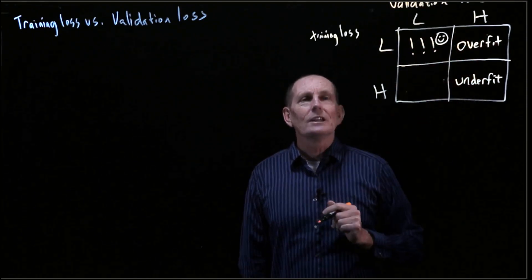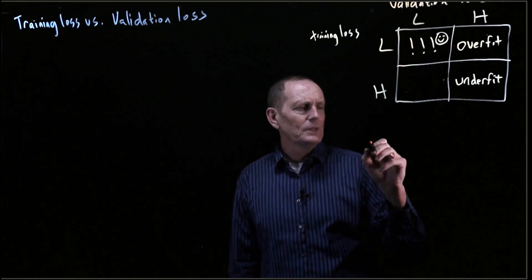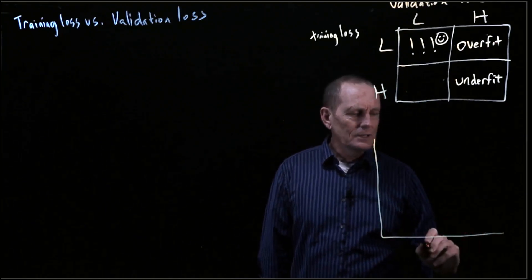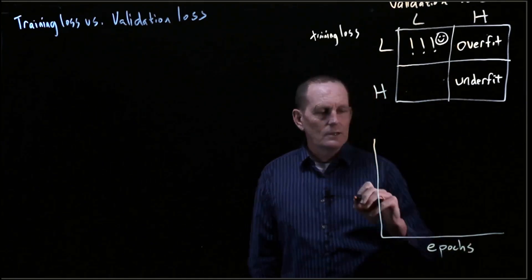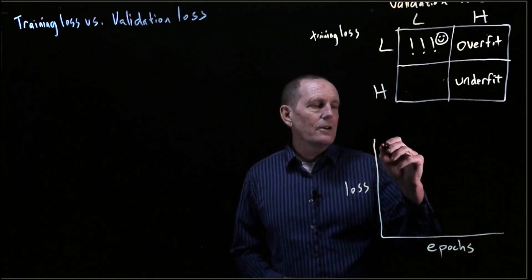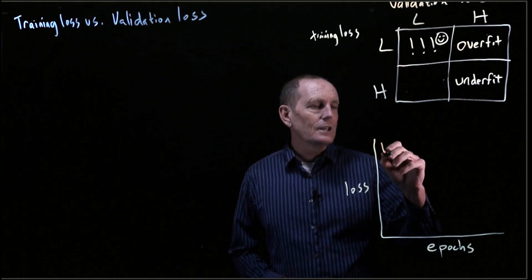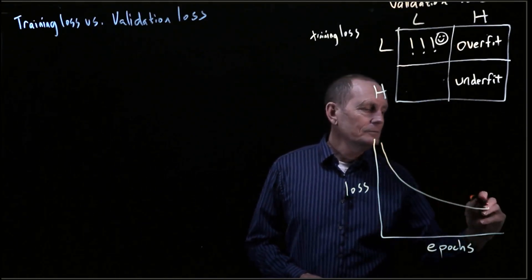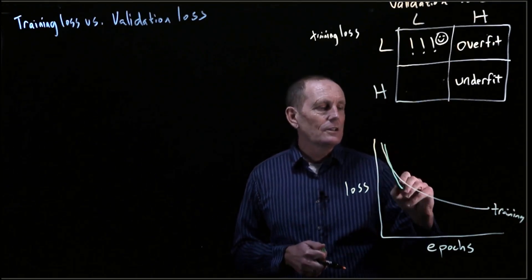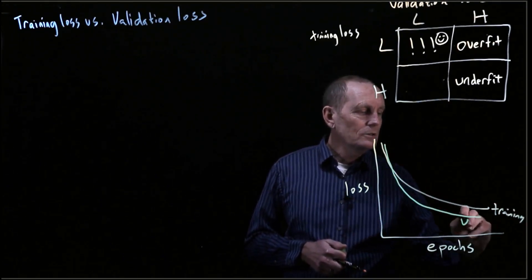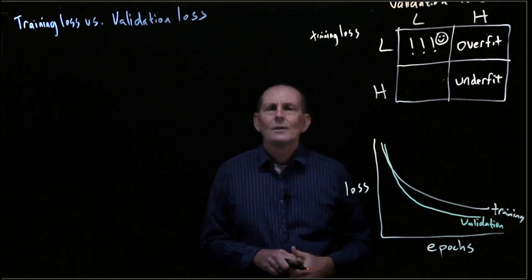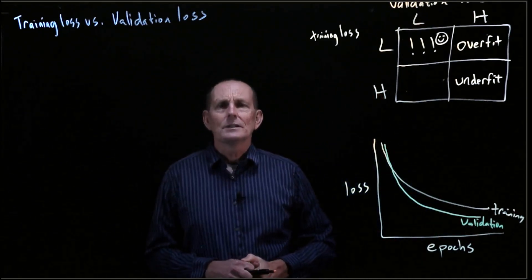If we have low validation loss and high training loss, you'd think that's not possible. So if we looked at a chart of epochs versus loss, and our training loss looked like this, but our validation actually went below it — so how could that happen? Well, there are several different possibilities.